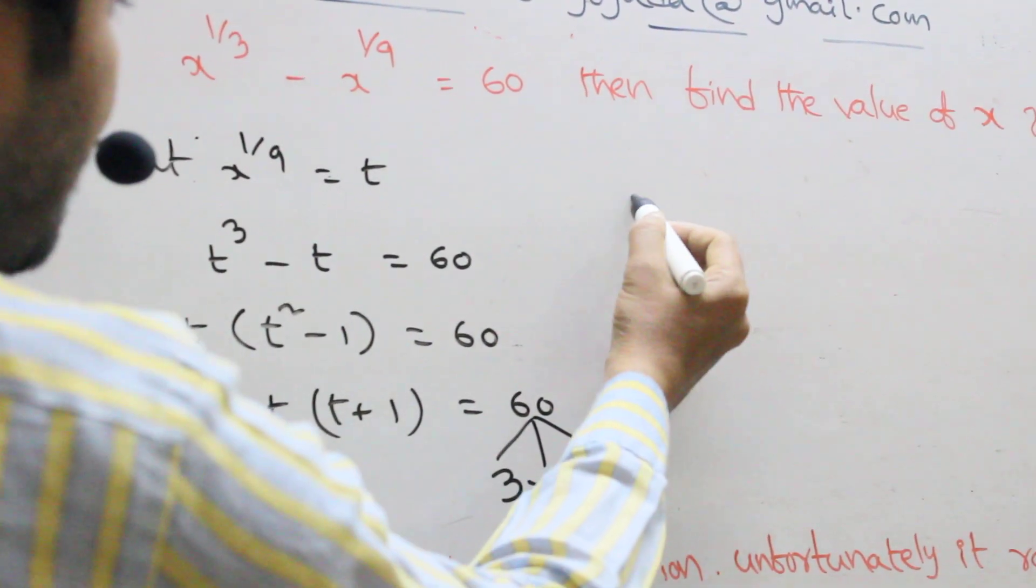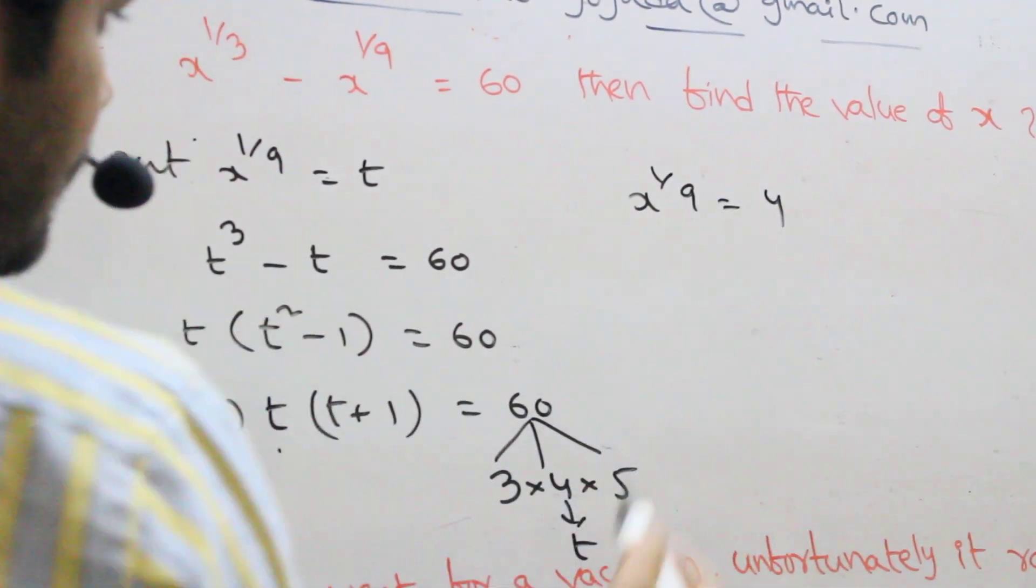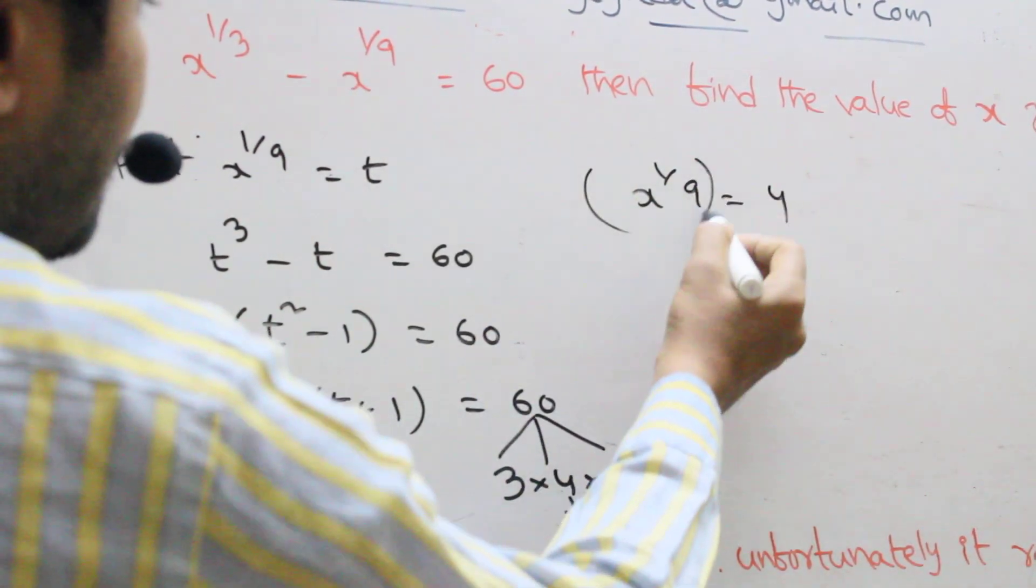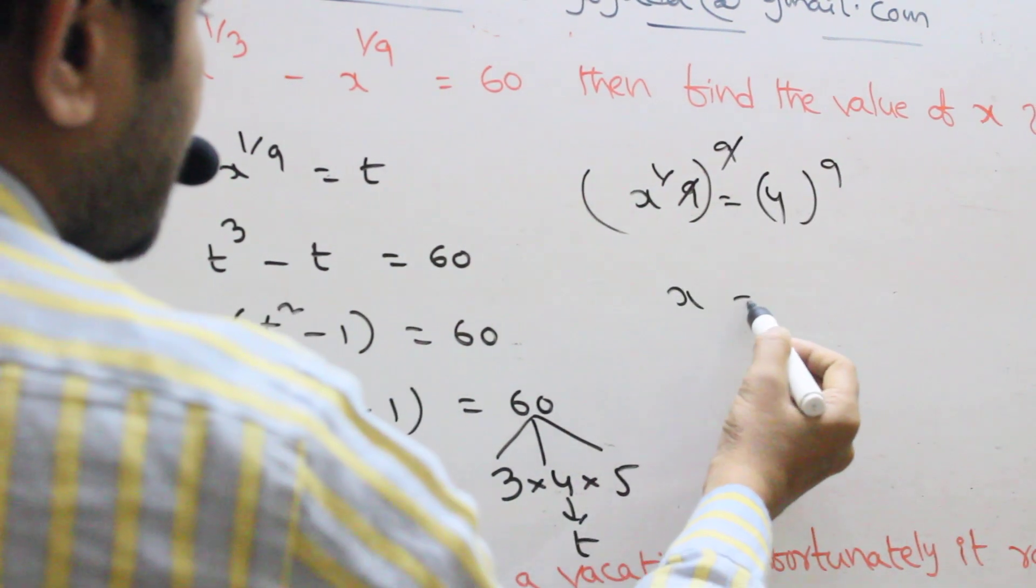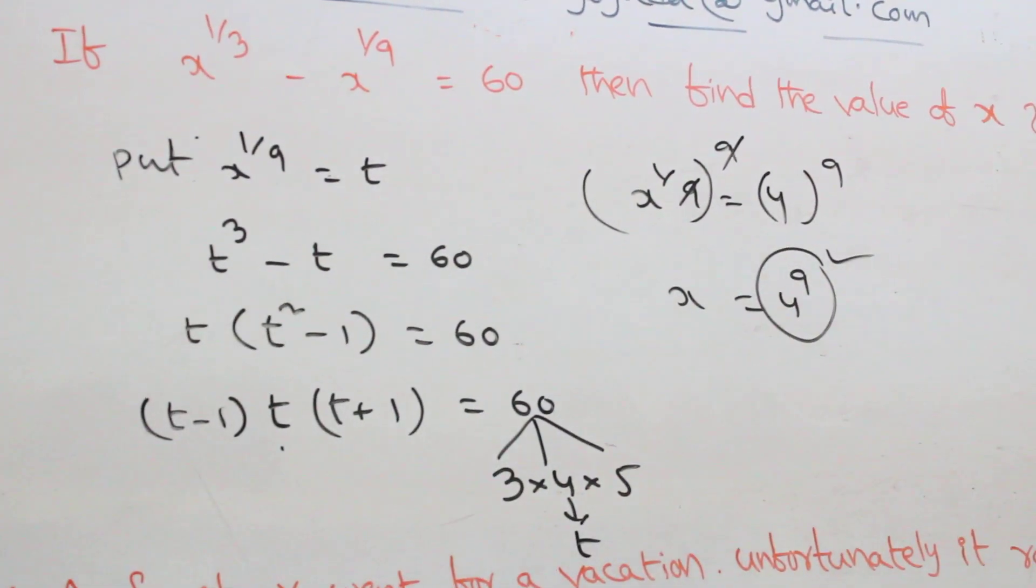In this one, X power one by nine, that is equal to t, how much? Four. Both side, whole power nine. Both side taking the whole power nine. Nine nine cancel, X equal four power nine. What is the answer value of the X? Four power nine.